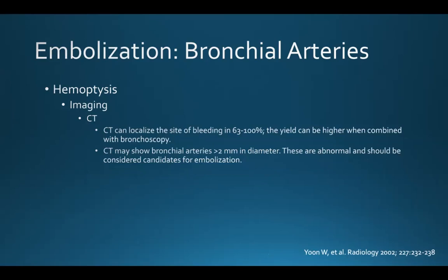CT is better at localizing the site of bleeding, and the rates can be as high as 63% to 100%. The yield can be even higher when combined with bronchoscopy. CT can be good at showing bronchial arteries that are greater than 2 millimeters in diameter — these should be considered abnormal on CT — and these patients can then be considered candidates for embolization.